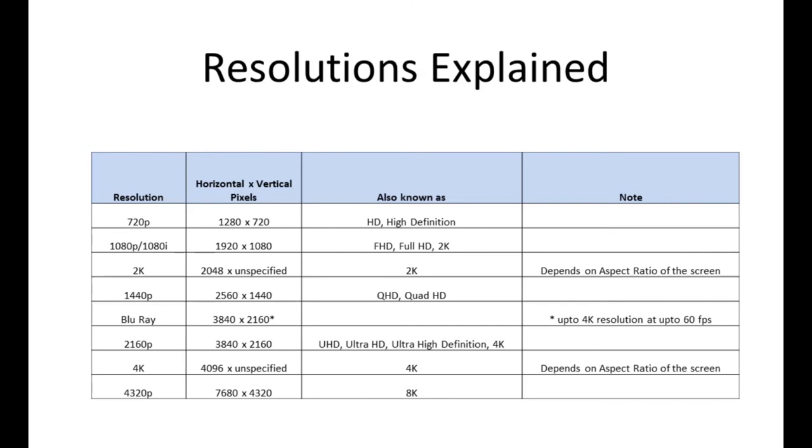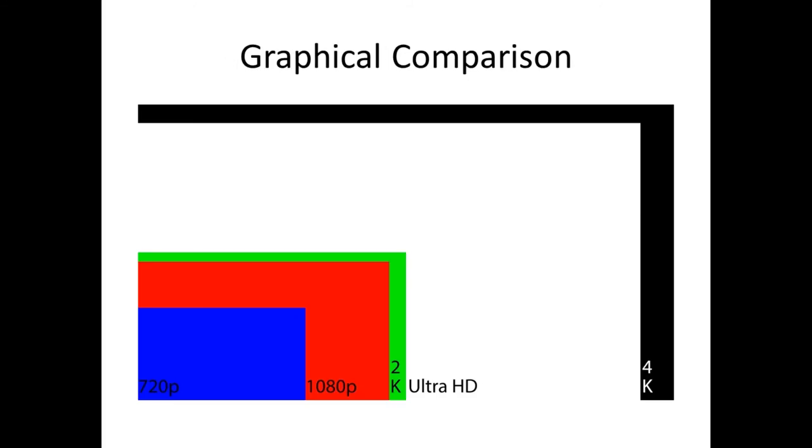Going further we have 4320p which stands for 8K video. We don't have any application of the 8K right now, we don't have the screens to display that, possibly in the future. But yeah, it stands for 7680 x 4320 pixels. Now this is just a graphical comparison of how the screen looks like when you have 720p versus 1080p, and the closest being 2K to 1080p, the next being Ultra HD format which is very close to 4K.